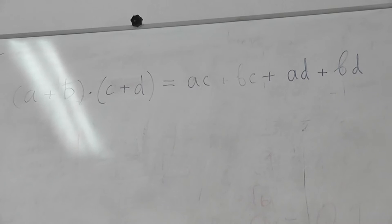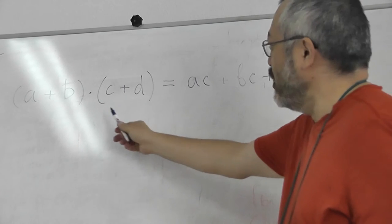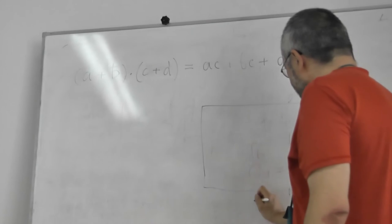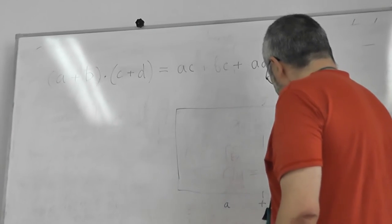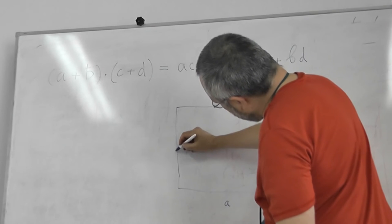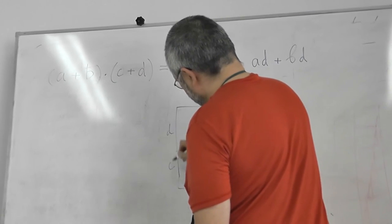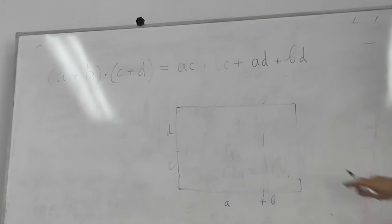But what I want you to do is to give a geometric version. What is this? It's a rectangle. One side is a plus b. And the other side is c plus d. So I want you to explain where are these pieces on this picture. Can anybody show parallel pieces?